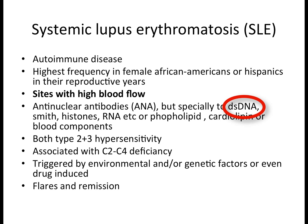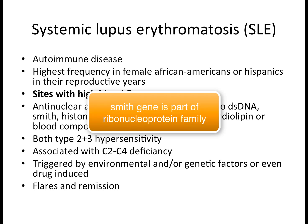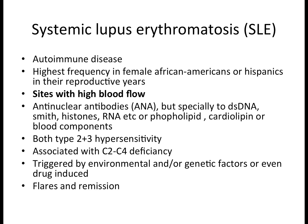What we need to look for are the specific nuclear components that are more specific to SLE. The highest specificity marker is anti-double-stranded DNA. But antibodies can also target histones, RNA, the Smith antigen (part of the ribonucleoprotein family), phospholipid membranes, cardiolipin found in the mitochondrial membrane, and blood components.